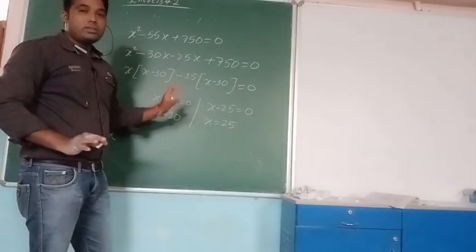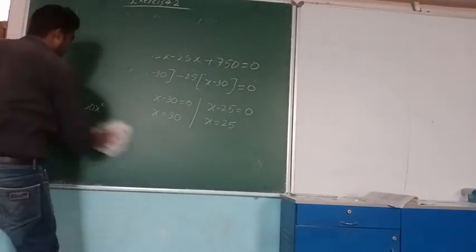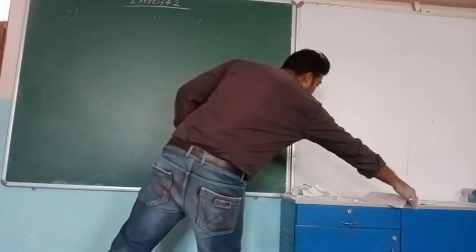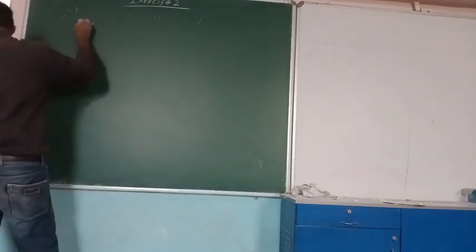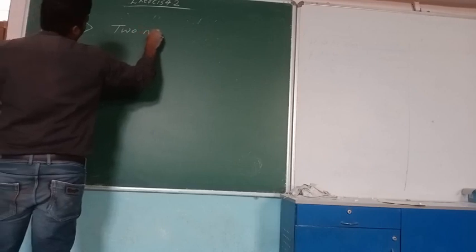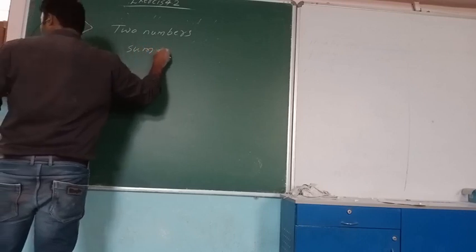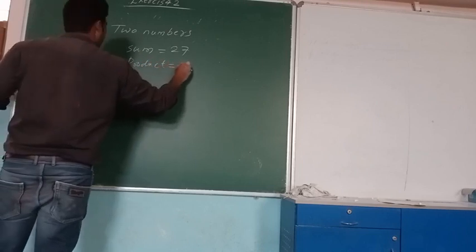This is the solution for the second question. Let us go to the third question, which is quite simple. The third question: find the two numbers whose sum is 27 and whose product is 180.